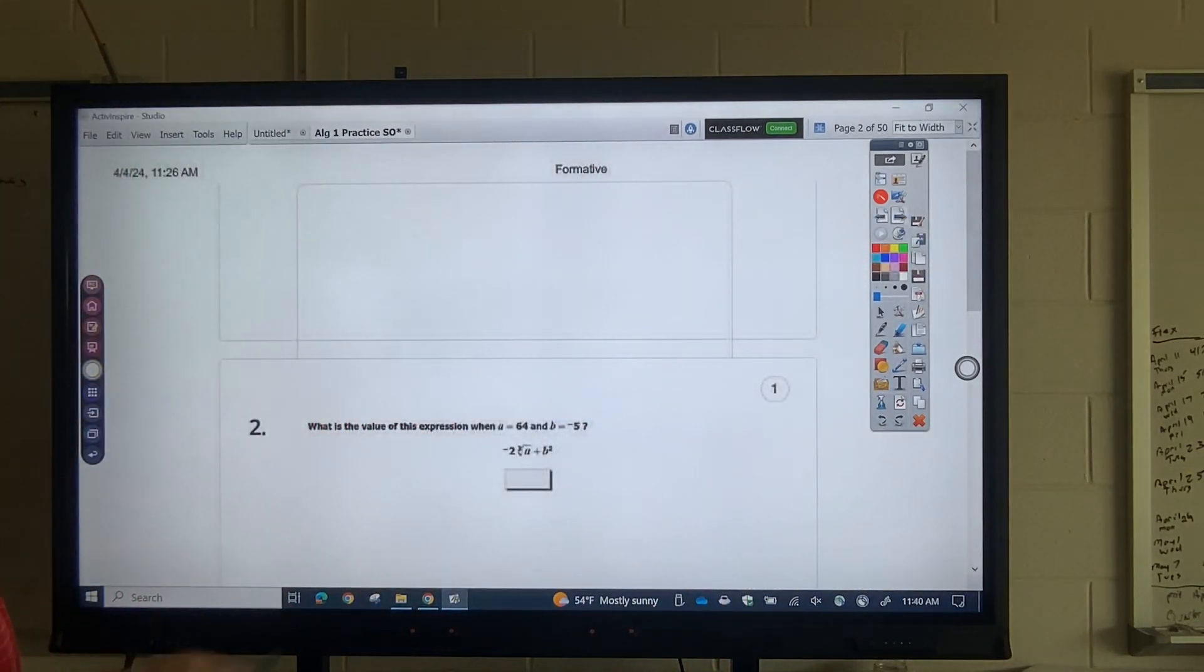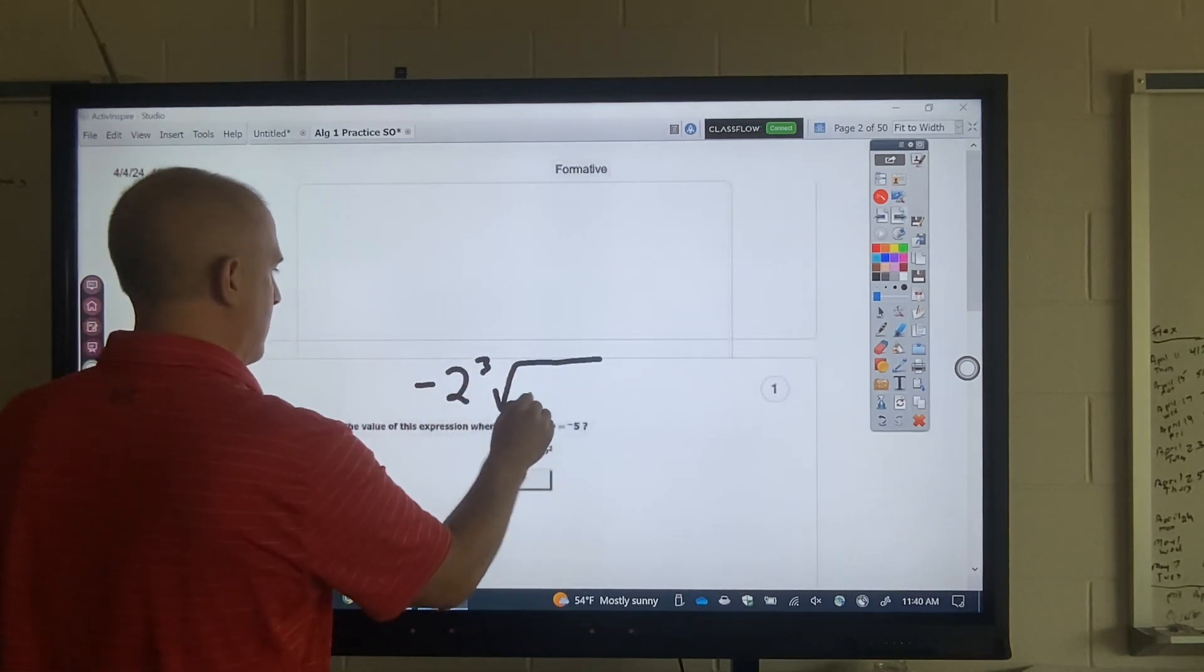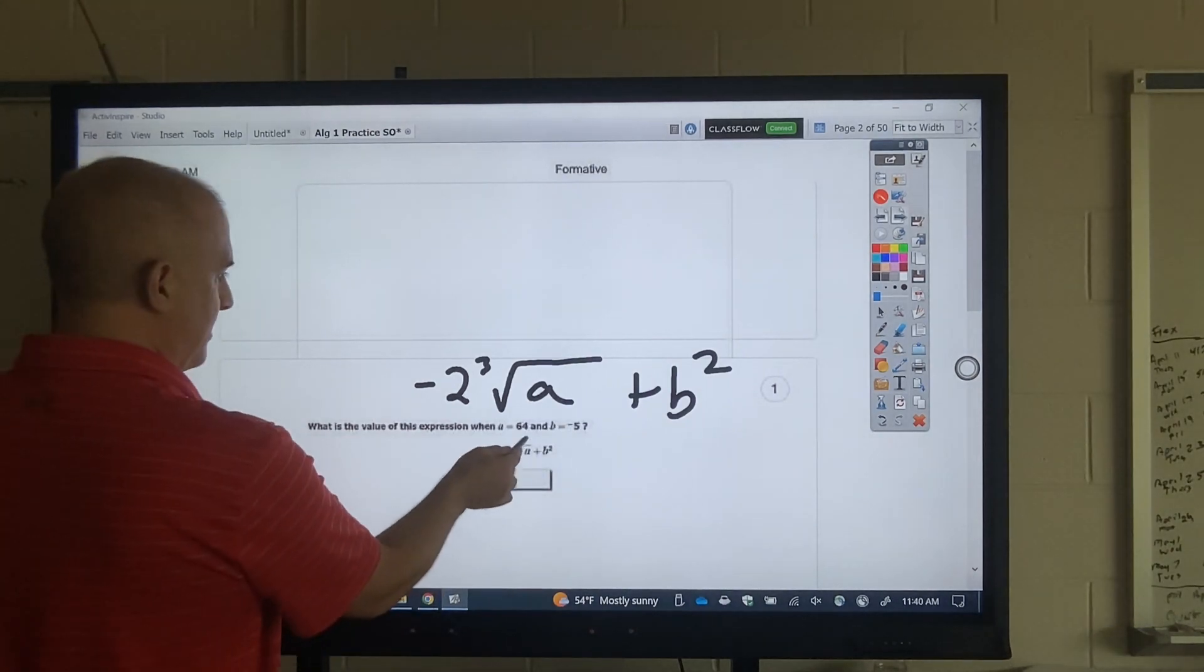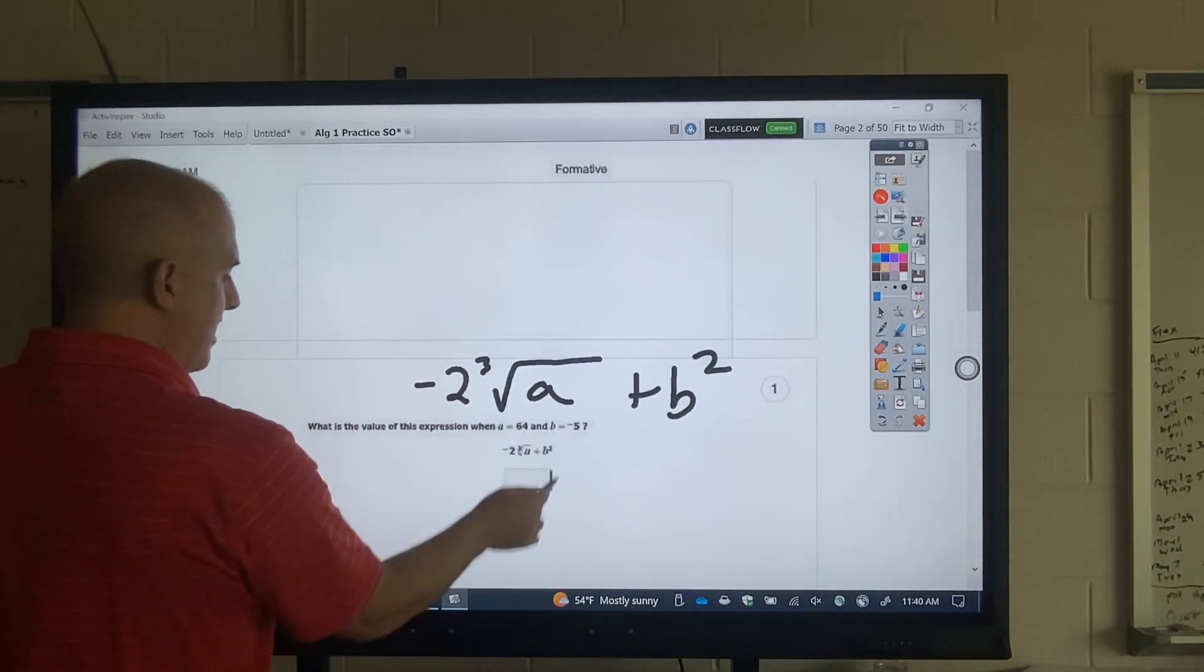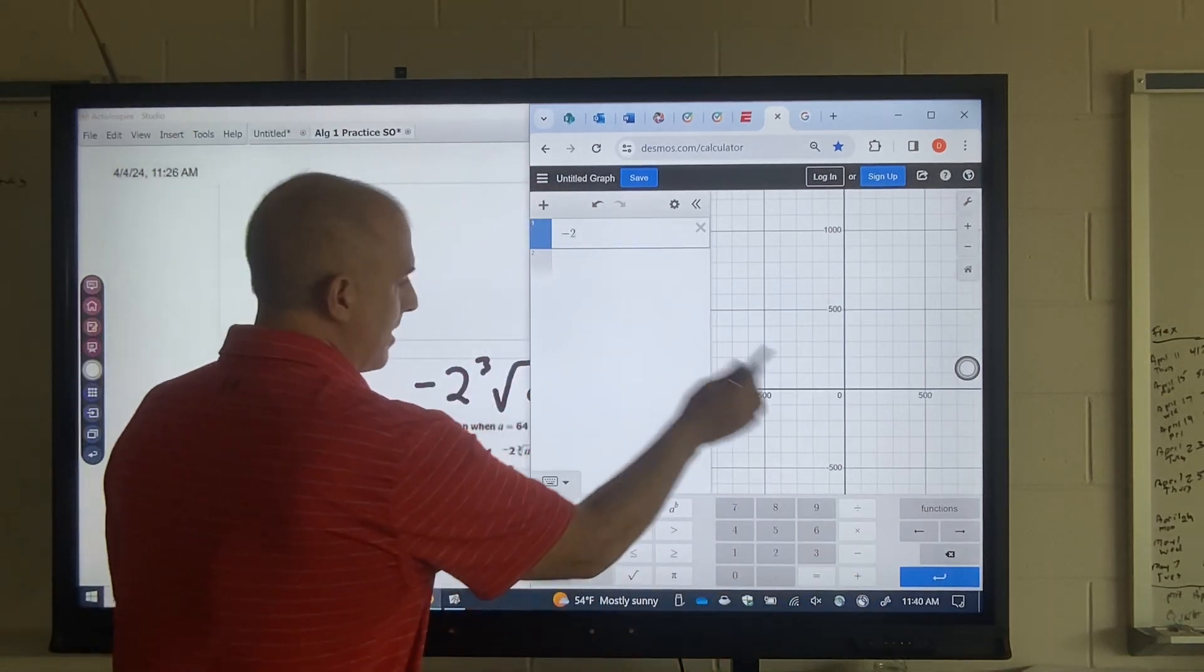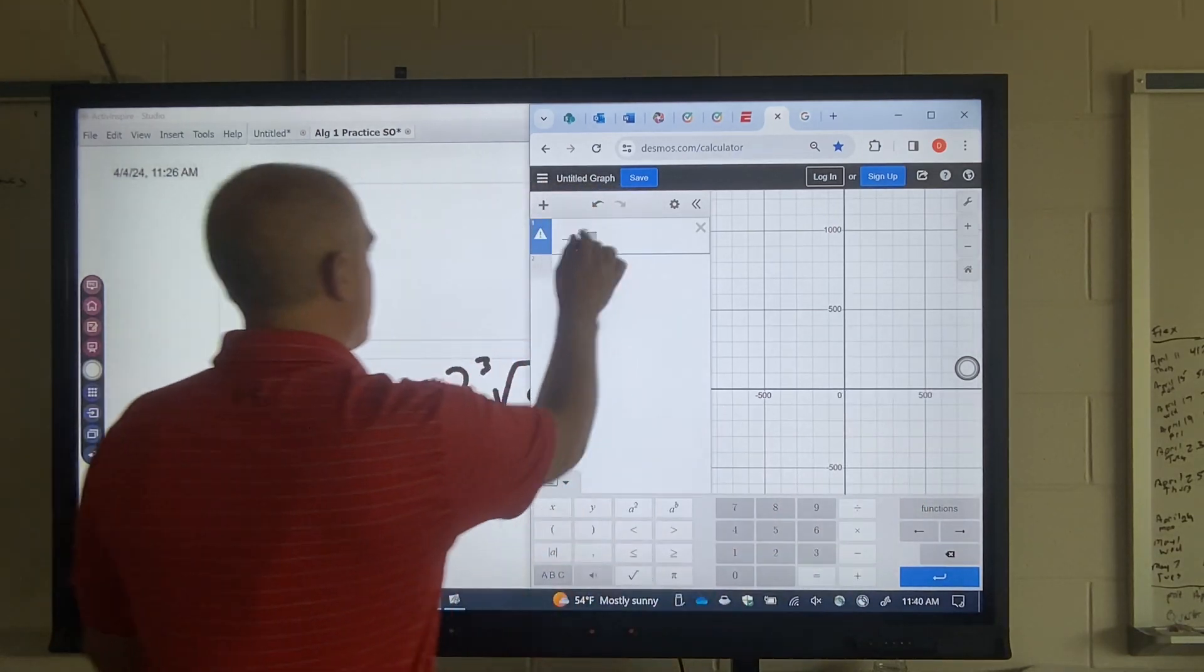Okay, all right. I'm just going to rewrite this so you can see it better. Okay, all right. So what I want to do is I want to put 64 in for A and negative 5 in for B. Okay, so I got negative 2. The way I get to the cube root is I go functions all the way to the bottom, Q root,